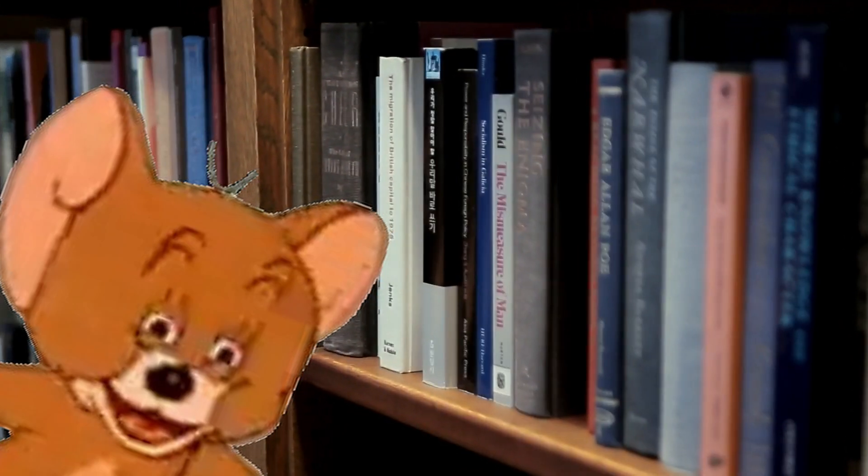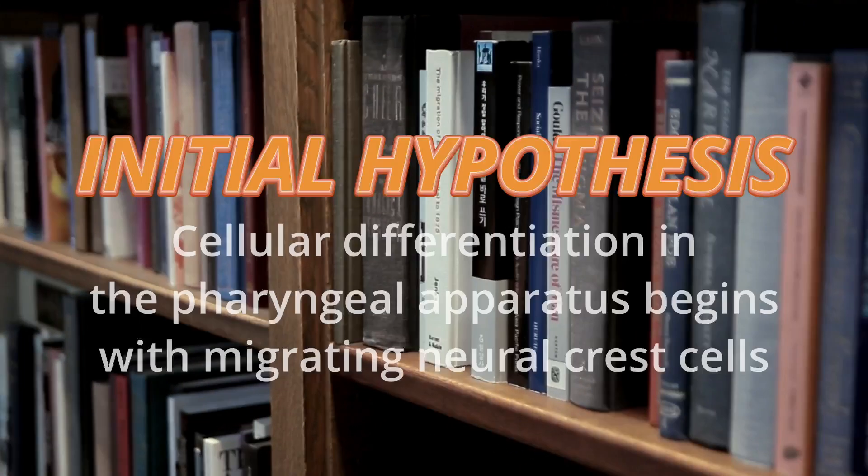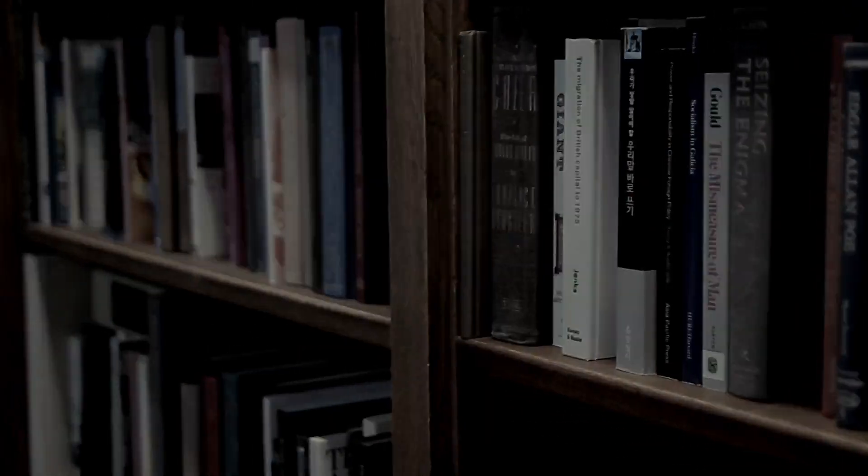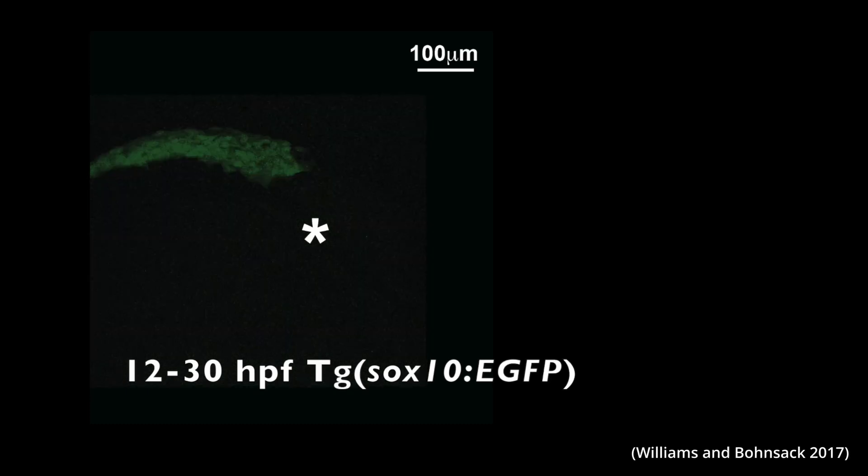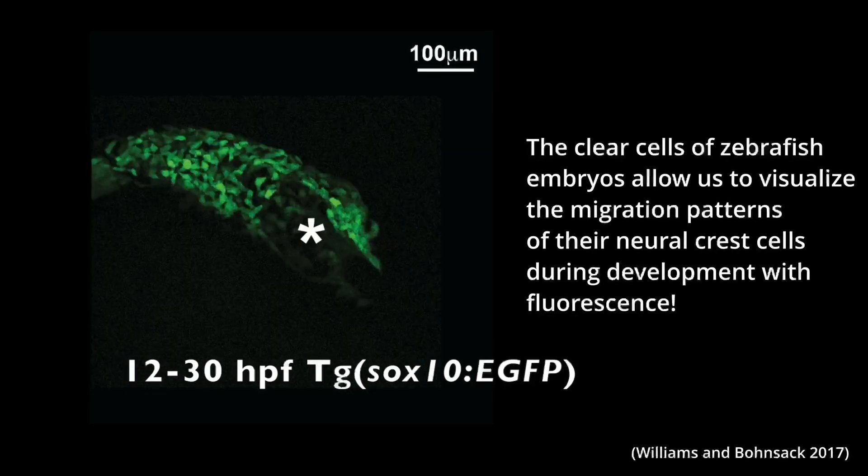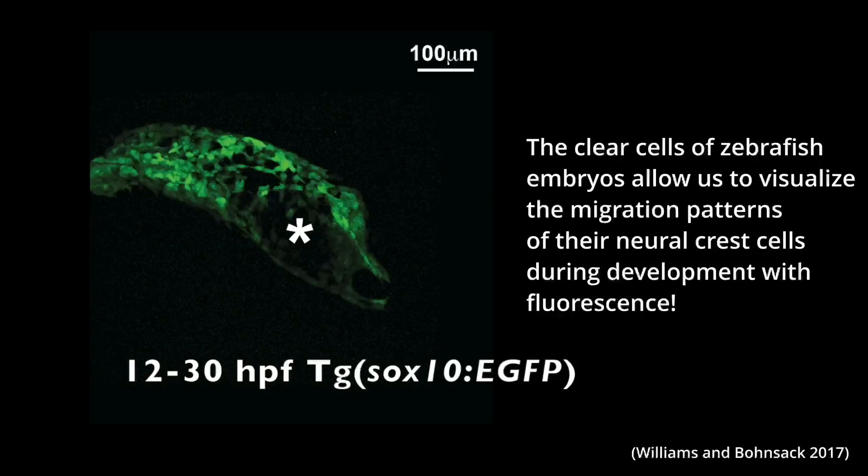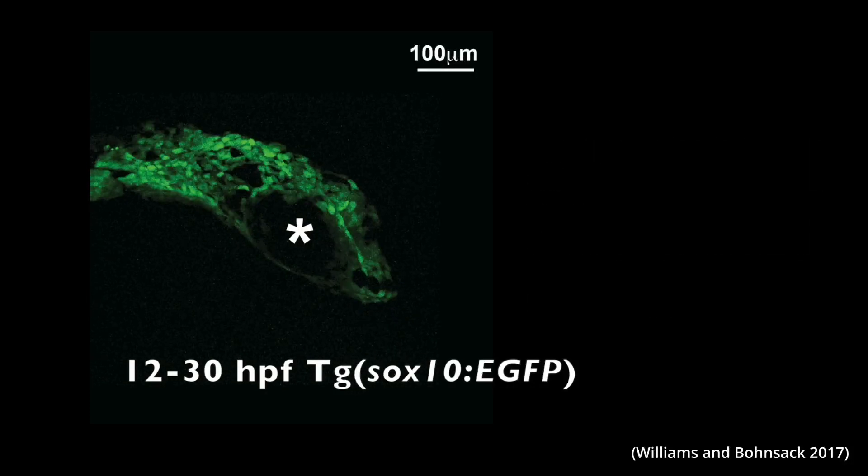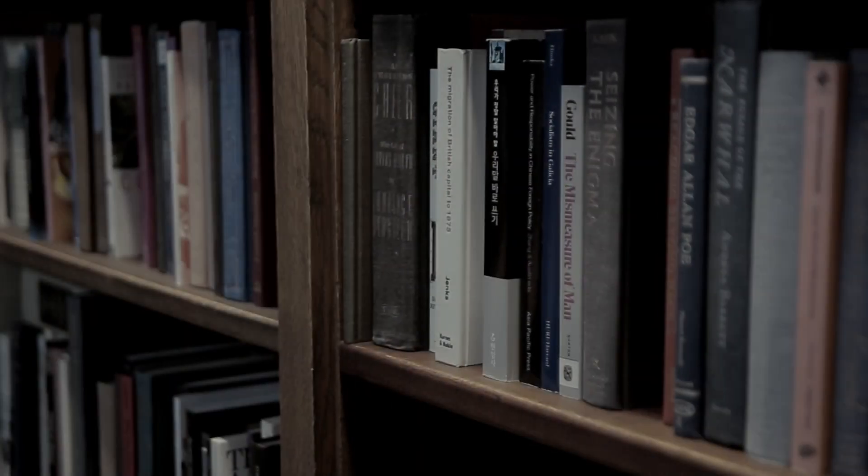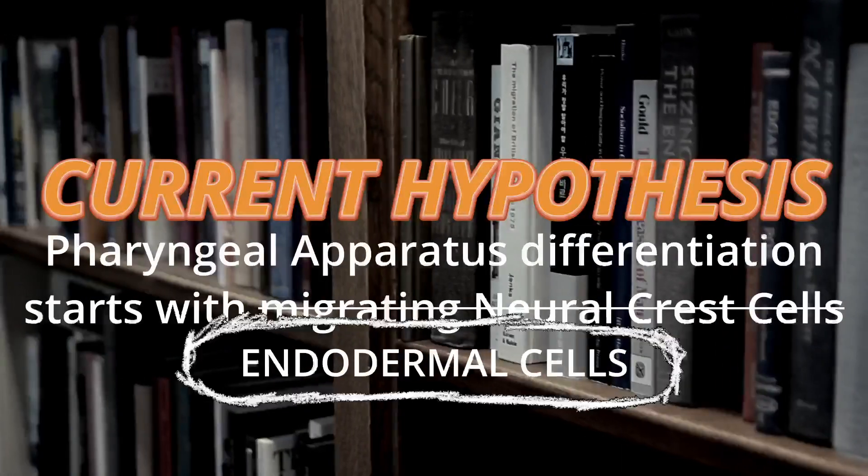A lot of the literature, cue the groans, don't worry it's just background, claims that the pharyngeal apparatus differentiation starts with migrating neural crest cells. These ectodermal overachievers, as you might remember, travel all over the embryo to build facial bones, nerves, skin pigment, and even parts of the heart. For a long time, scientists thought these cells were the spark that kicked off the cascade leading to the formation of the pharyngeal apparatus. But plot twist, newer research shows that it's actually the endoderm that gets the ball rolling.